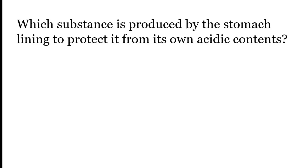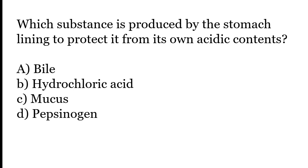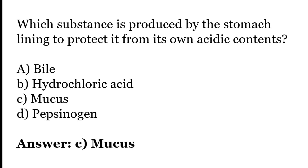Which substance is produced by the stomach lining to protect it from its own acidic contents? Options: bile, hydrochloric acid, mucus. The correct answer is option C — mucus is produced by the stomach lining to protect it from its own acidic contents.